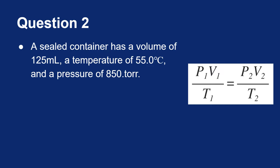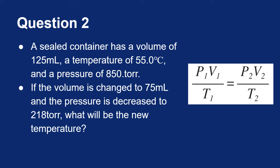The volume of this container is 125 milliliters, the temperature is 55 degrees Celsius, and there's a pressure of 850 torr. So already I see Celsius, so I know there's going to be a Kelvin conversion coming up. The volume is changed to 75 milliliters, the pressure is decreased to 218 torr, and we want to know what the new temperature will be.